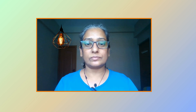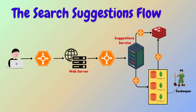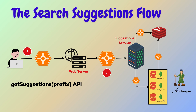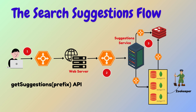Now let's understand how the search flow works. When the user begins typing in the search box, the request is routed through a load balancer to the suggestions service, which invokes the get suggestions API. The suggestions service first checks for suggestions in the Redis cache using the provided prefix, ensuring frequently searched terms are quickly retrieved and reducing latency.